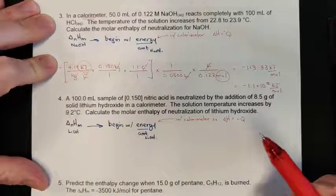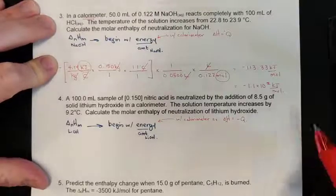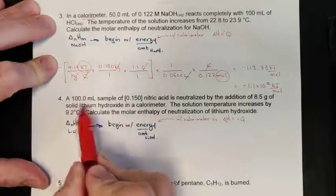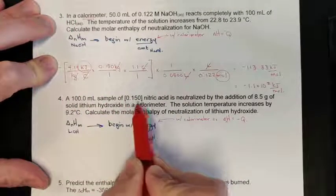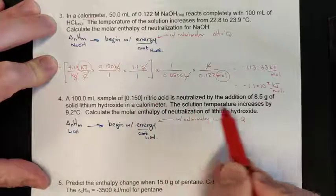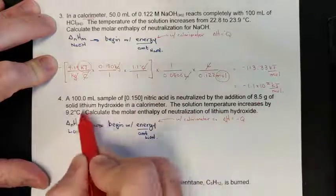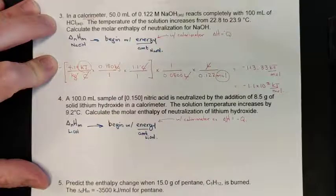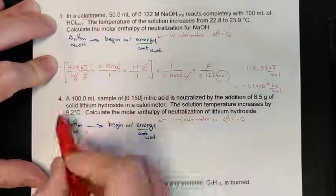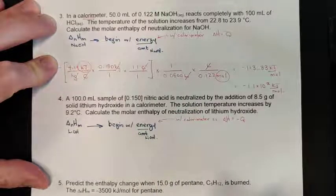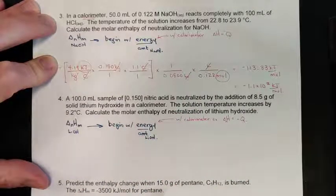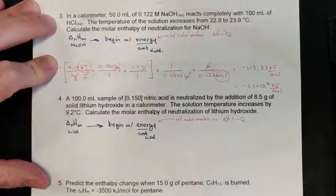Here we have another question very similar to example number three. We have a 100 mL sample of 0.15 molar nitric acid being neutralized by the addition of 8.5 grams of solid lithium hydroxide in a calorimeter. The solution temperature decreases by 9.2°C. Calculate the molar enthalpy of neutralization for lithium hydroxide.